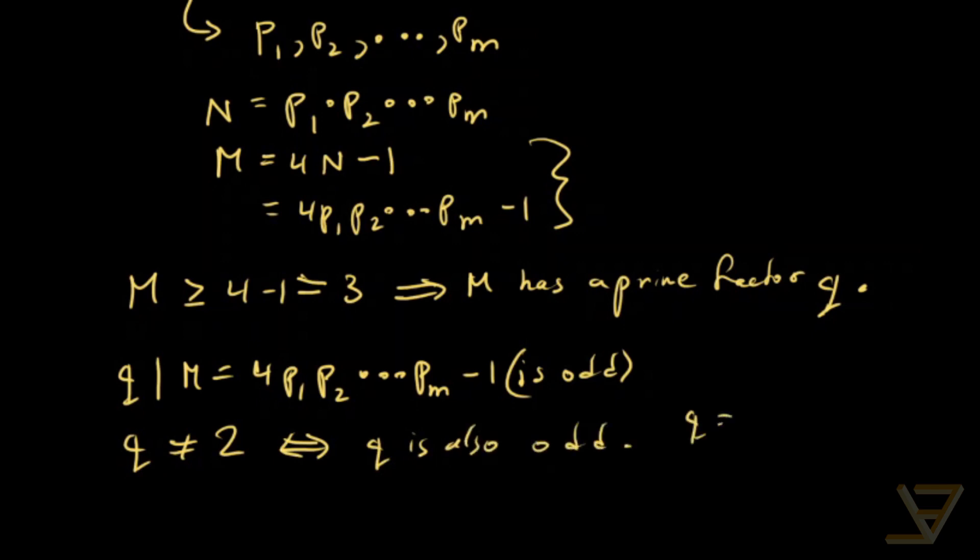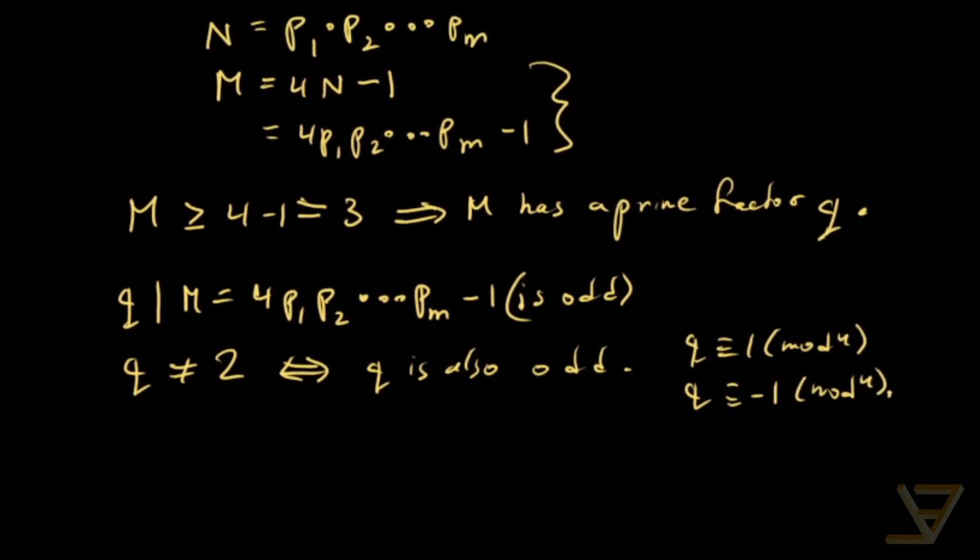That means q is congruent to 1 mod 4, or q is congruent to -1 mod 4. But the problem is that if q is congruent to -1 mod 4, then that's the same as 3 mod 4.